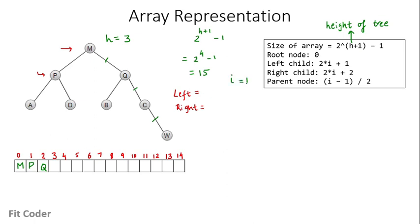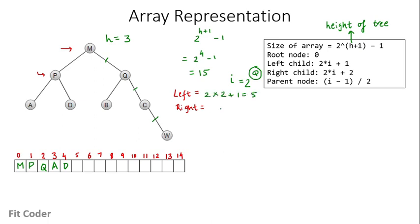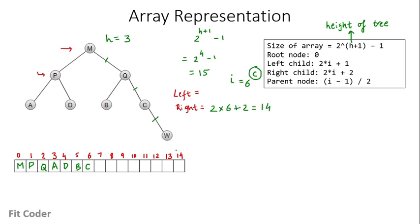For node P at index 1, the left child A goes at index 3 and the right child D goes at index 4. For node Q at index 2, the left child B goes at index 5 and the right child C goes at index 6. For node C at index 6, it has no left child, so the right child W goes at index 2*6+2 = 14.